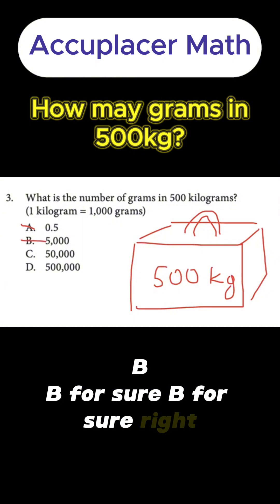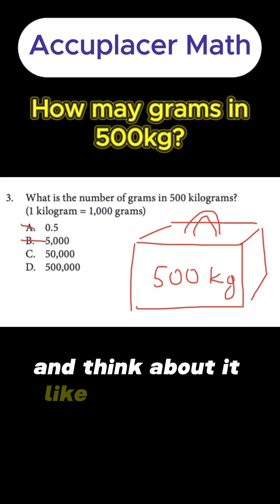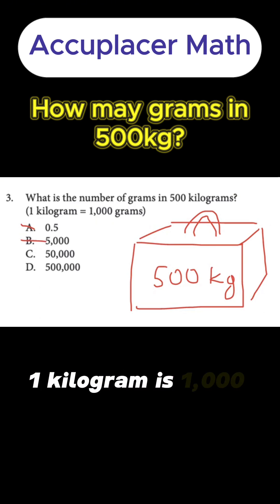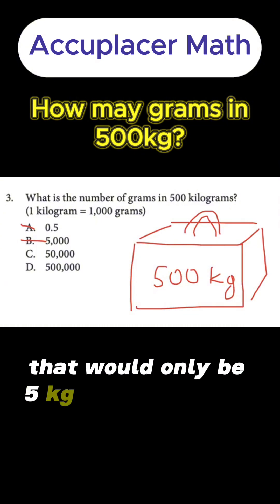Right. And think about it. If we're talking about—one kilogram is 1,000 grams. So if it's B, 5,000 grams, that would only be 5 kilograms. You know what I'm saying?